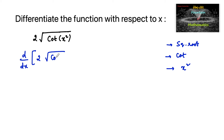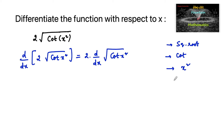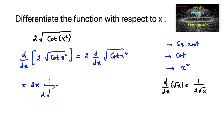We write d/dx of 2√(cot(x²)), which is equal to 2 into d/dx of √(cot(x²)). We know that d/dx of √x is equal to 1/(2√x), so we can write 2 into 1/(2√(cot(x²))), and by chain rule the next function is cot, so we write d/dx of cot(x²).